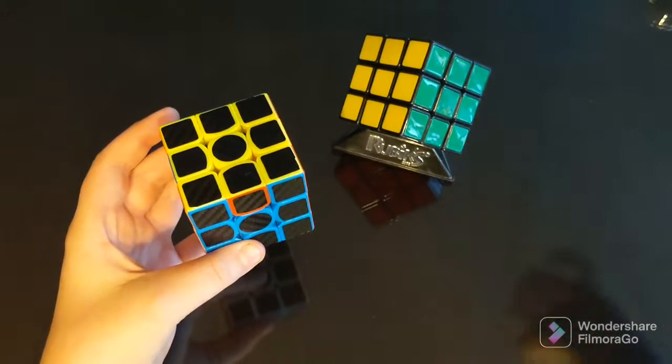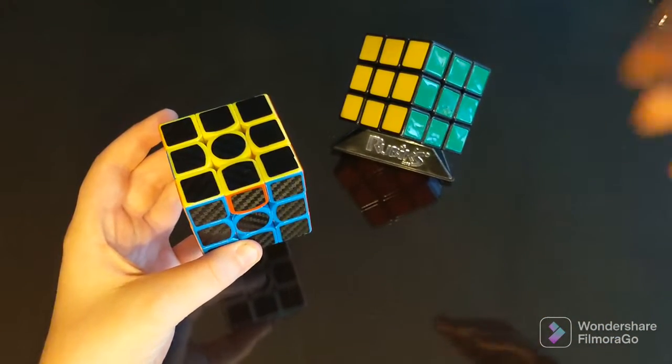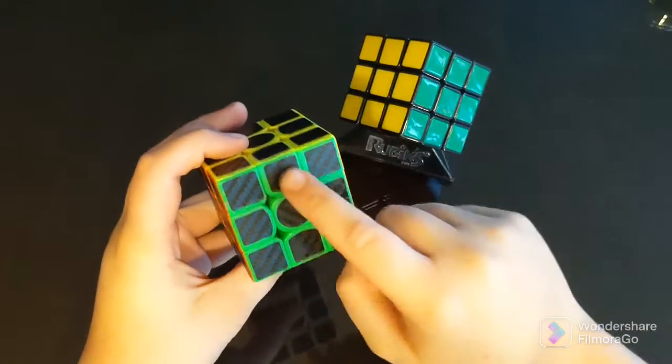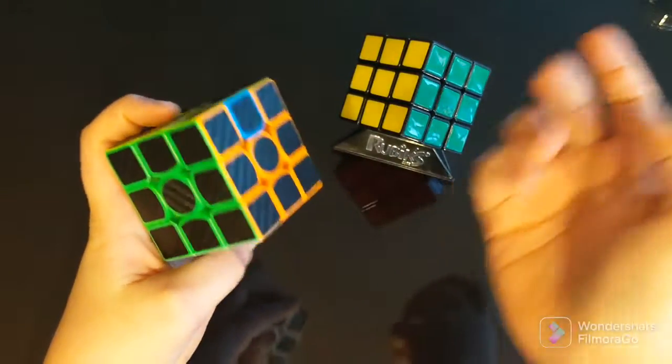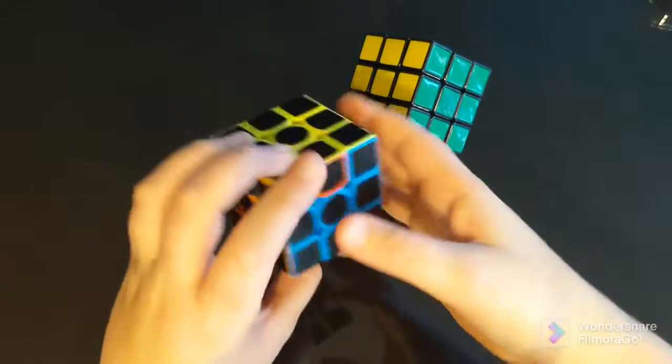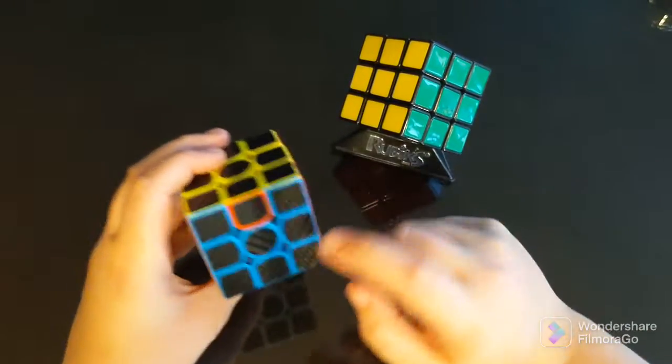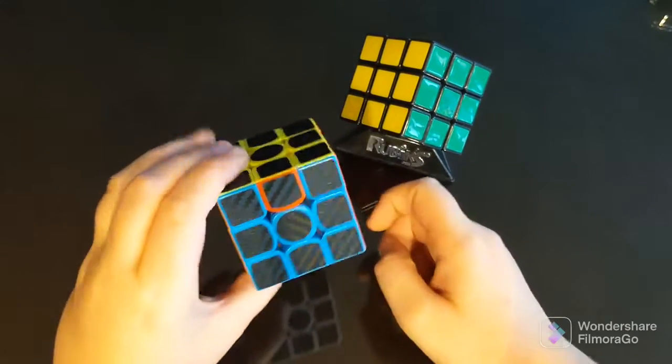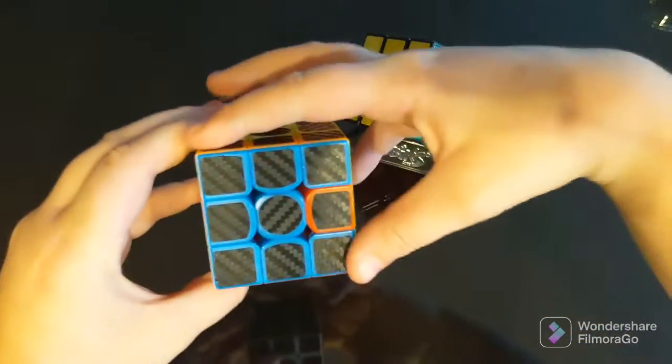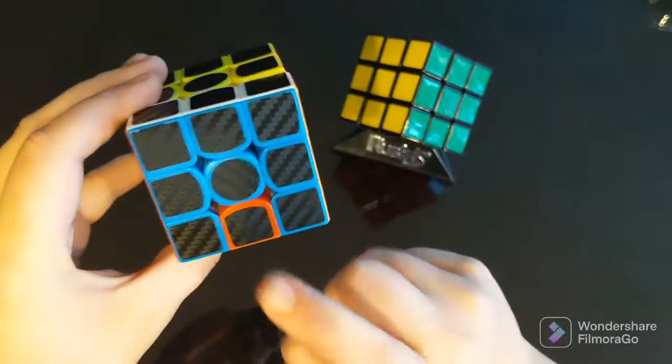Once again, if you didn't actually fully get this side solved and like you had your blue here and your green here, then you're going to have to do it twice. I take the blue, so it's red that needs to go there, so I'm just going to twist it twice like this. Now it should be down here.